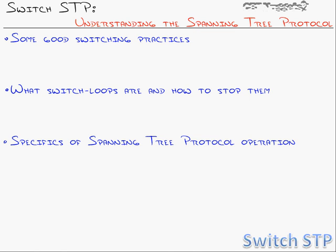Those are the basic concepts of Spanning Tree. For a well-designed redundant network, Spanning Tree has to play a role to disable redundant connections until you need them. We covered good switching practices, the three-layer design with access, distribution, and core layers and redundant connections, what switch loops are and how to stop them with Spanning Tree, and the specifics of STP operation — root bridge election, bridge priority plus MAC address forming the bridge ID, and how switches find the best path to the root. These concepts are critical for the next video on configuring Spanning Tree and its enhancements.